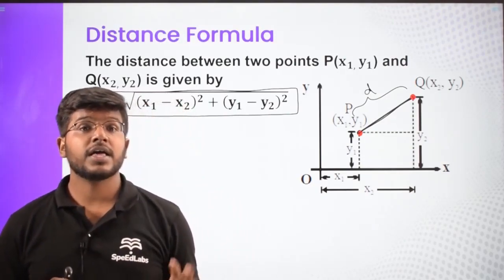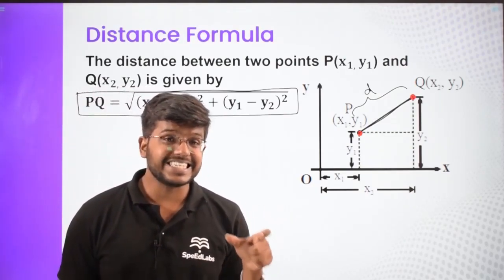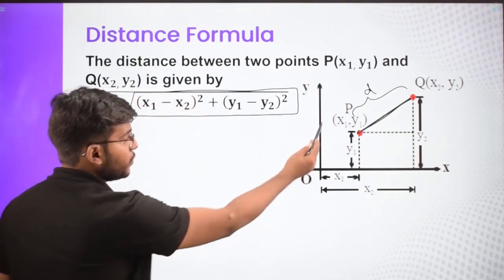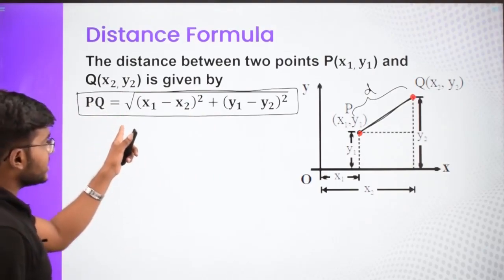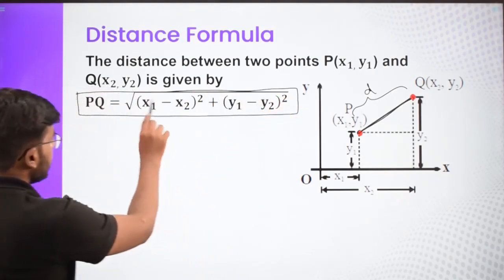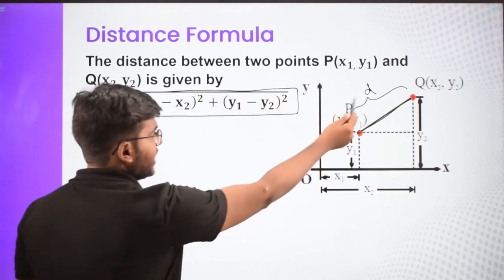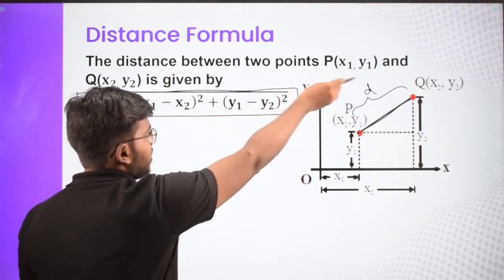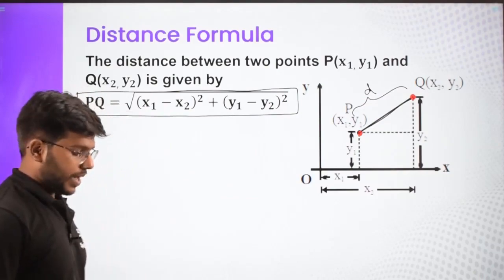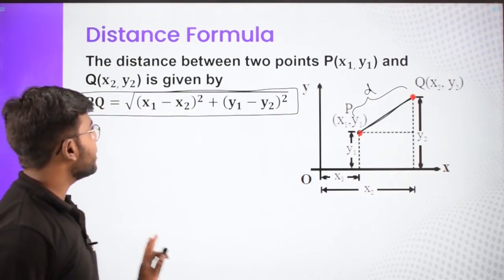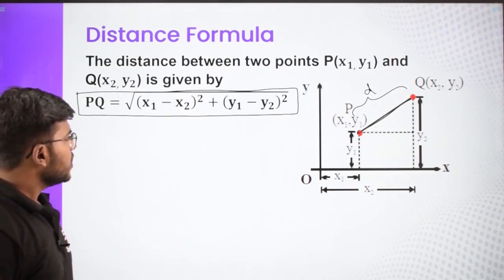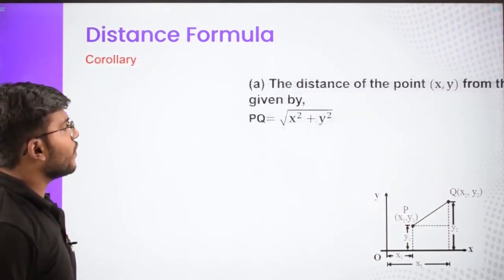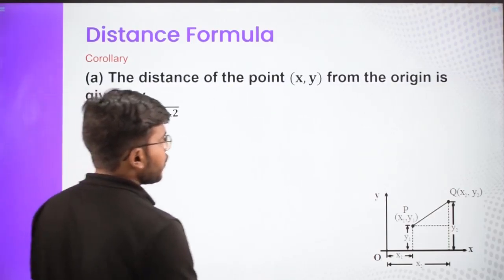Why do we use the distance formula? To find the distance between two points. If you know the coordinates of both points, the distance is simply the square root of the difference of their x-coordinates squared plus the difference of their y-coordinates squared — that is, (x1 minus x2) squared plus (y1 minus y2) squared. This is how we calculate the distance between any two points. The same formula can also be applied when we want to find the distance of a point from the origin.